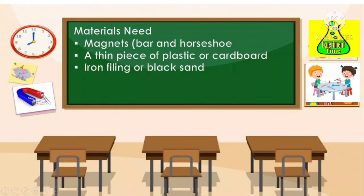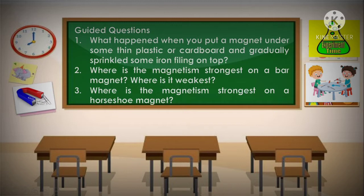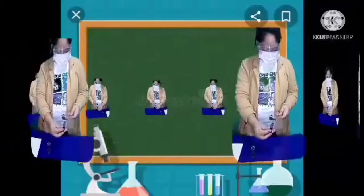Do the following experiment on the strength of different kinds of magnets at different locations. Materials needed: magnets — bar and horseshoe — a thin piece of plastic or cardboard, and iron filings or black sand. Step 1: Put the bar magnet under some thin plastic or cardboard. Step 2: Gradually sprinkle some iron filings on top. Step 3: Observe what happens. Step 4: Do the same procedure with the horseshoe magnet and observe what happens. Guided questions: What happened when you put a magnet under the plastic and sprinkled iron filings on top? Where is the magnetism strongest on a bar magnet? Where is it weakest? Where is the magnetism strongest on a horseshoe magnet?